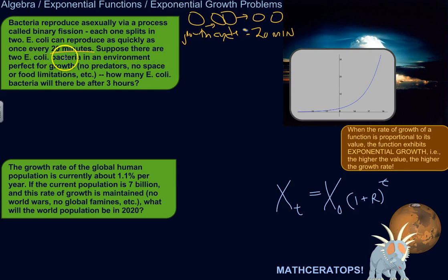Because this t will represent the number of growth cycles that have occurred. Okay, suppose there are two E. coli bacteria in an environment perfect for growth. Just to simplify this, there's no predators, no viruses, no space or food limitations. The petri dish is infinitely wide and it's got an infinite amount of food, so it can just grow forever. There's no constraints. How many E. coli bacteria will there be after three hours?